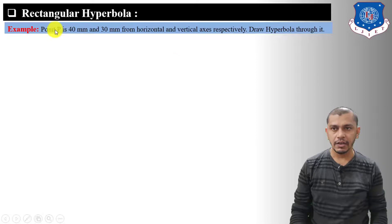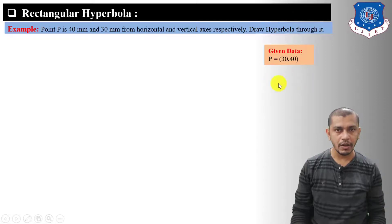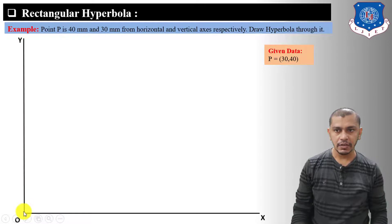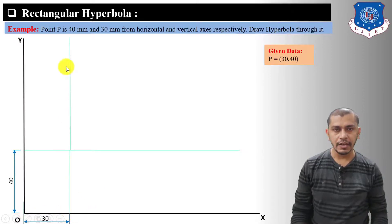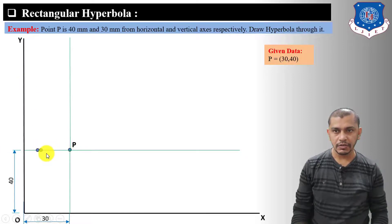Now let's move on to the rectangular hyperbola method. The problem: point P is 40 mm from the horizontal axis and 30 mm from the vertical axis. Draw the hyperbola passing through this point P. Draw x-axis and y-axis perpendicular to each other, mark the origin, measure 40 mm on the y-axis and draw a horizontal line, measure 30 mm on the x-axis and draw a vertical line — their intersection gives point P. Between the y-axis and point P on this line, mark divisions: 1, 2; and beyond P mark divisions 3, 4, 5.